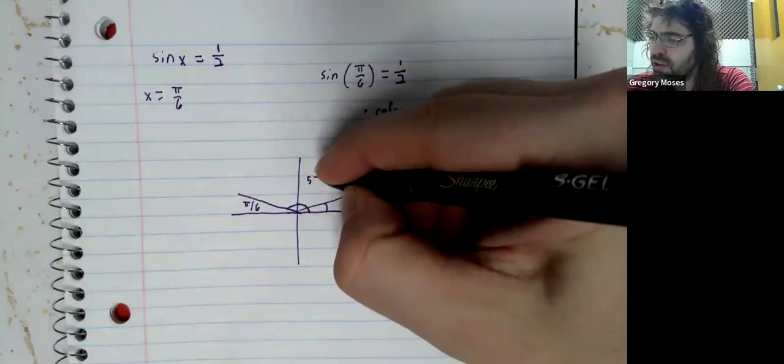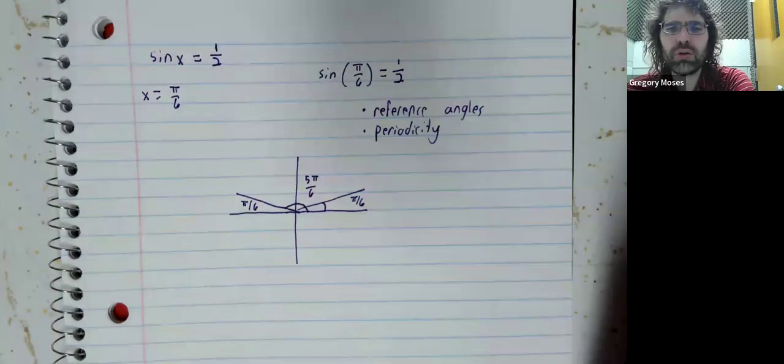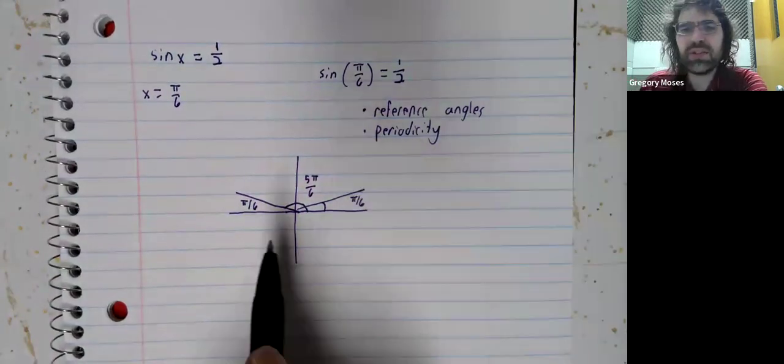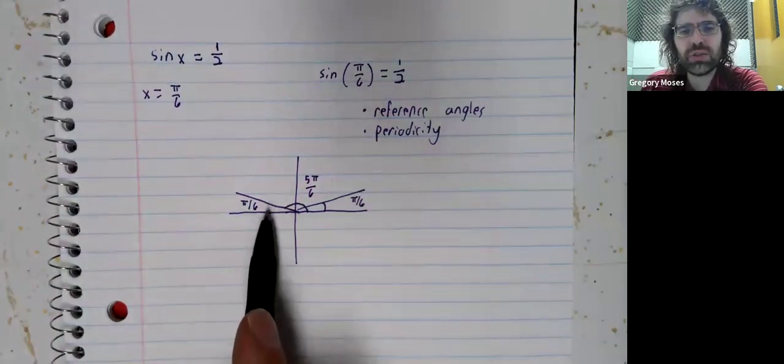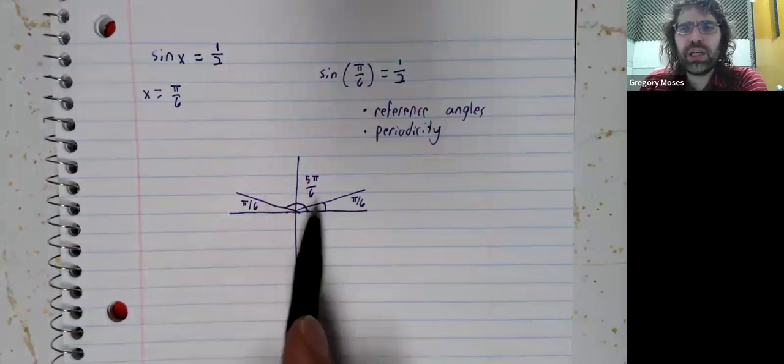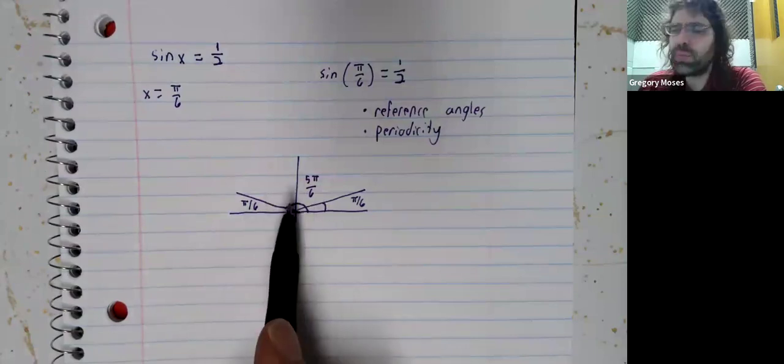Then five pi over six in the second quadrant. And between zero and two pi, these are the only solutions.